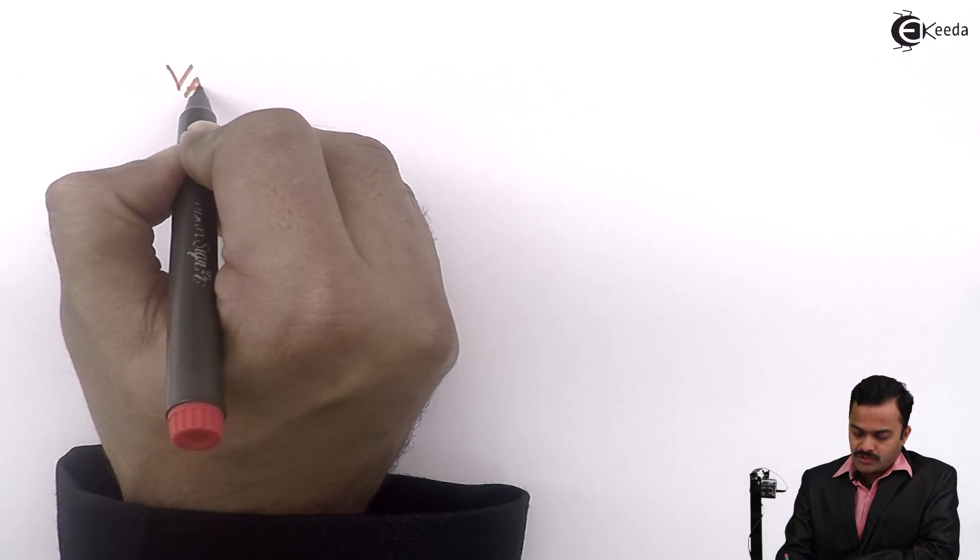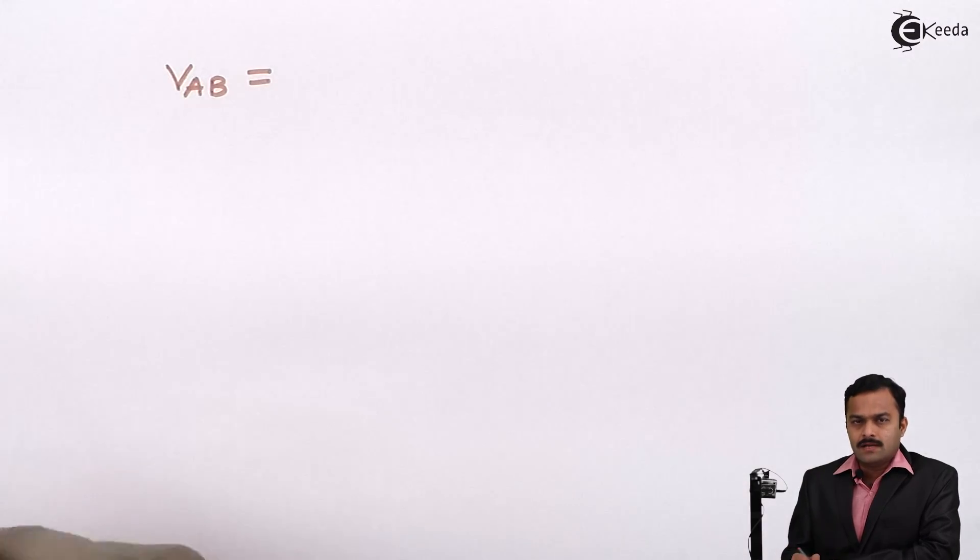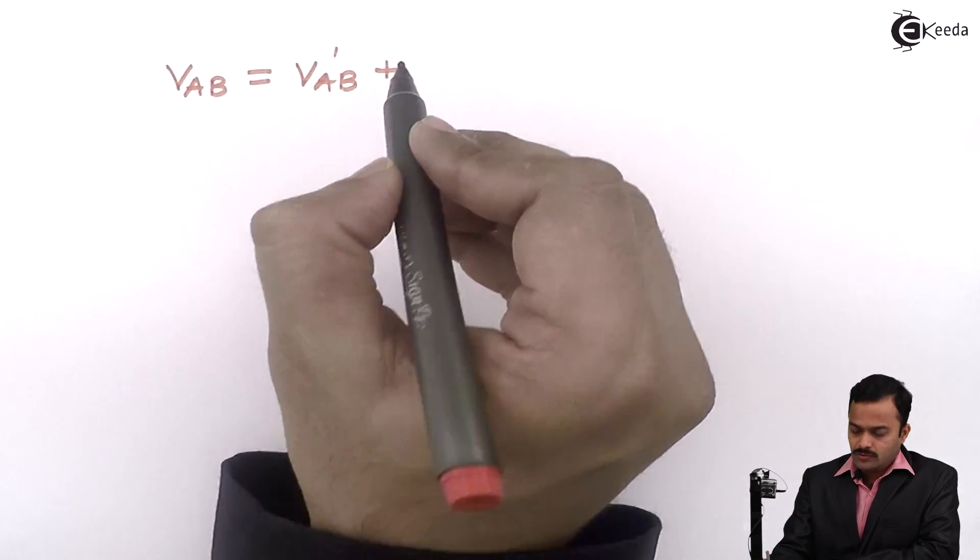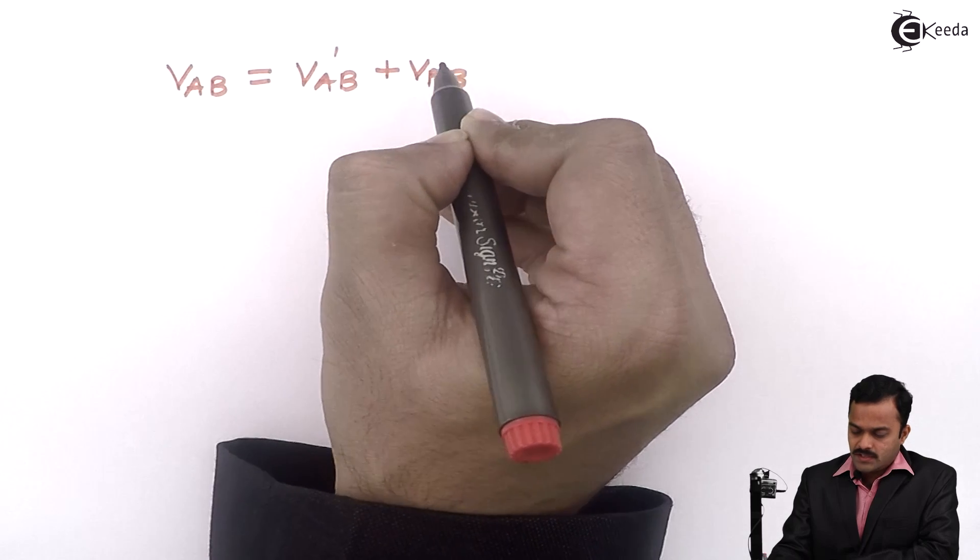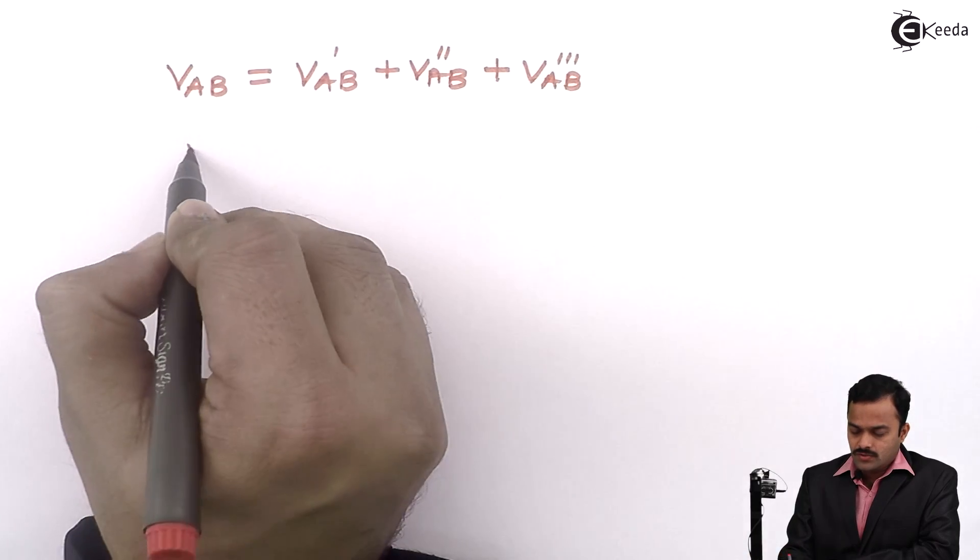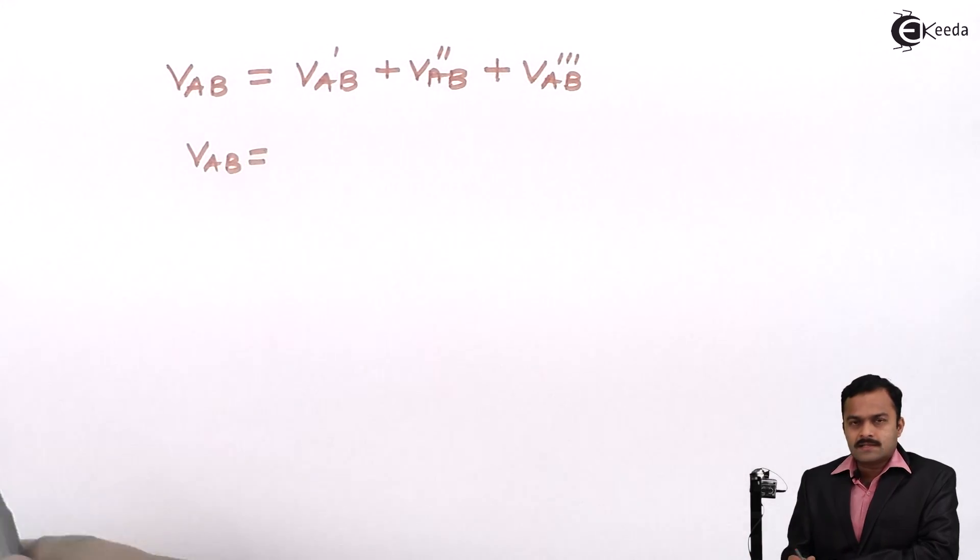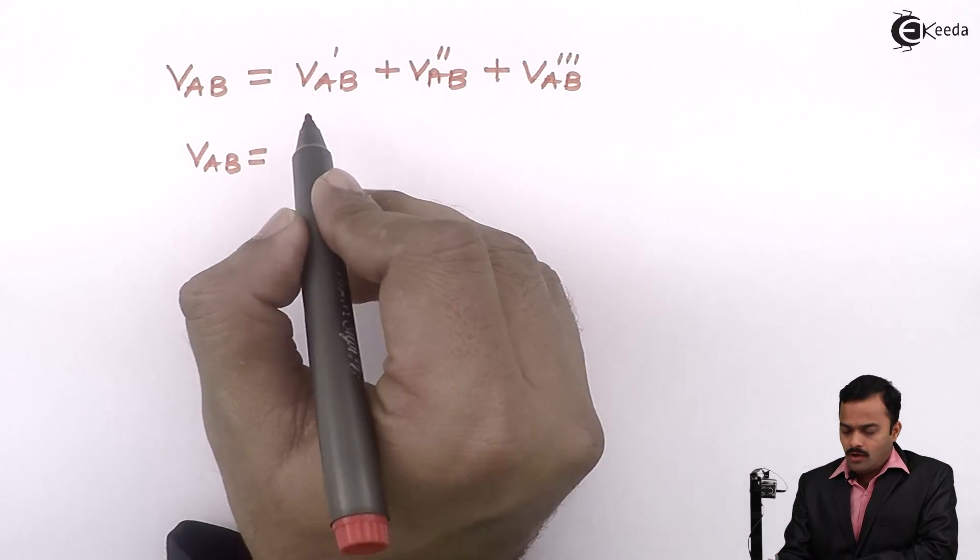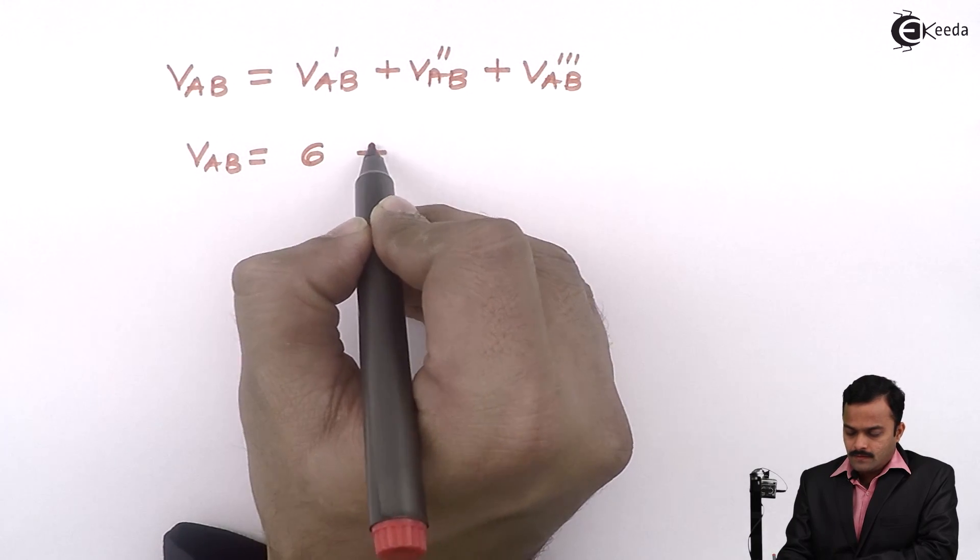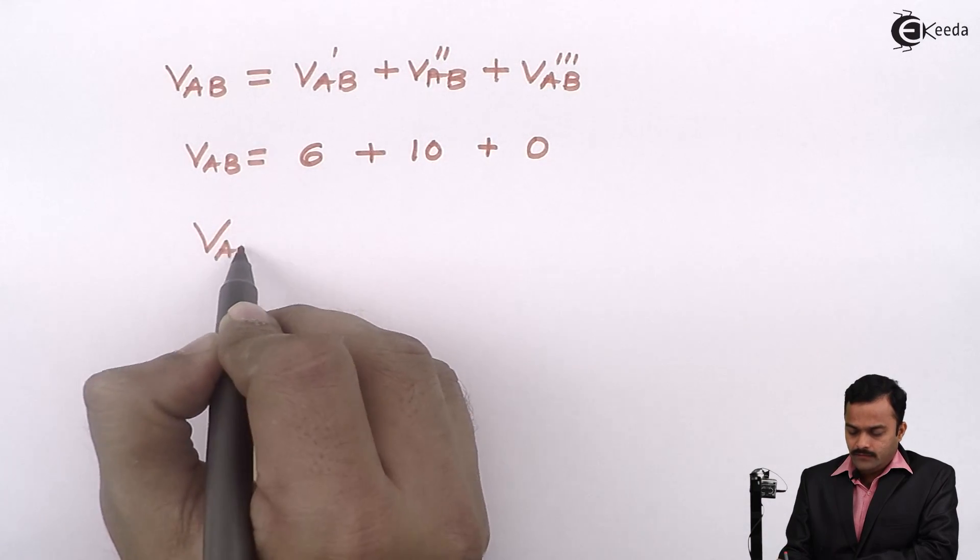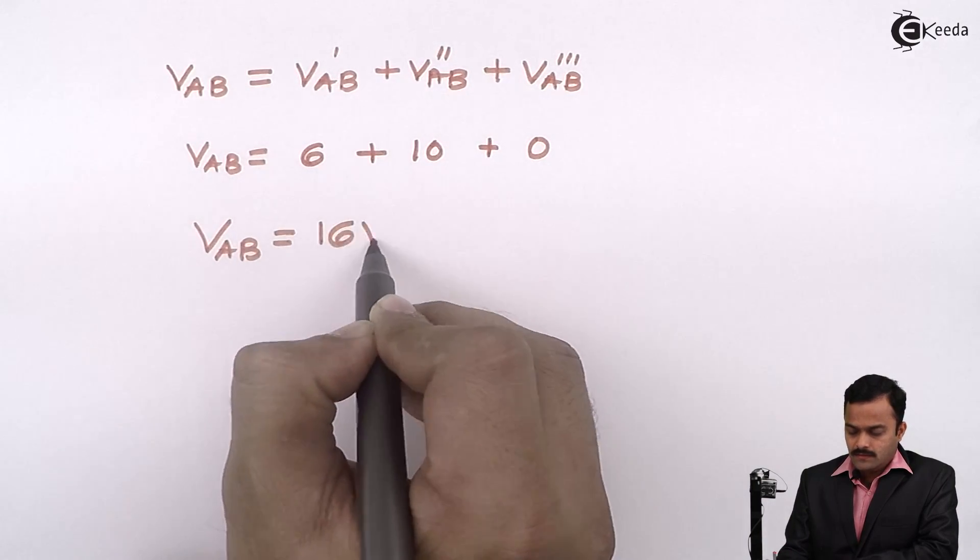But finally, as per the statement of superposition theorem, the response here, response is a voltage between points A and B, will be the algebraic sum of response because of first source, response because of second source, and response because of third source. Since in all the three answers, I am getting answer VAB where A is positive with respect to B, so I can simply add all the responses. So 6 volt plus 10 volt plus 0 volt, and finally VAB I will get 16 volt.